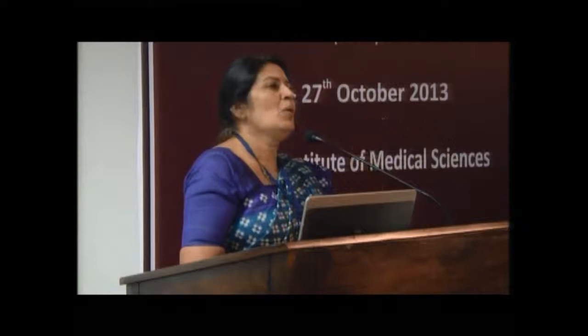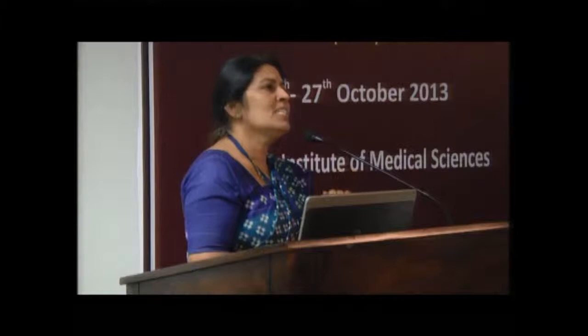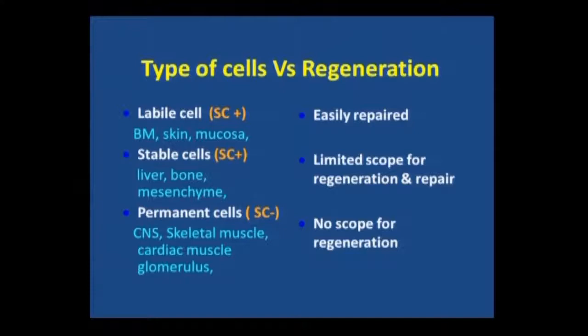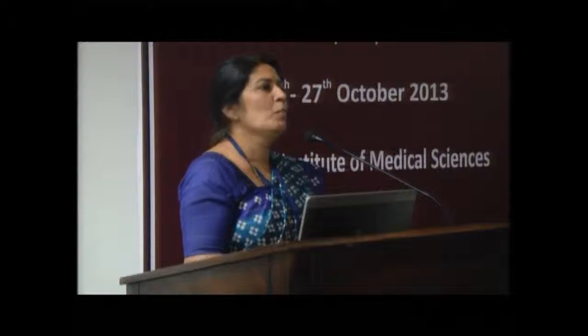As Sujata introduced — the low, medium, and high regenerative capacity — in pathology, we were taught that all the cells in the body can be divided into three types. They're called labile cells, which don't require signaling to divide; they include bone marrow, skin, and mucosa. The stable cells are SOS cells — as and when required — and that includes bone, liver, and mesenchymal tissues. The permanent cells, till now we believed they do not divide. We go to the gym, the muscle increases, but the number of muscle cells doesn't increase. The examples are central nervous system, skeletal muscle, cardiac muscle, and glomerulus.